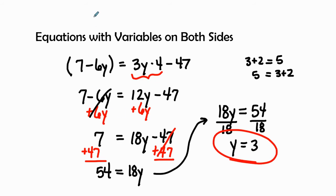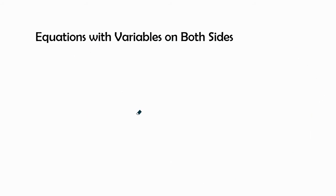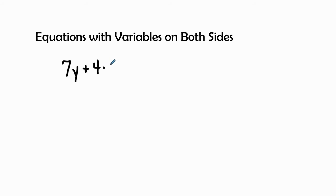Let's try one more equation for practice. Our next equation is 7y plus 4 times 8, equal to 8 minus 5y plus 132.